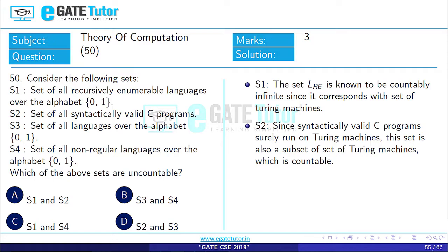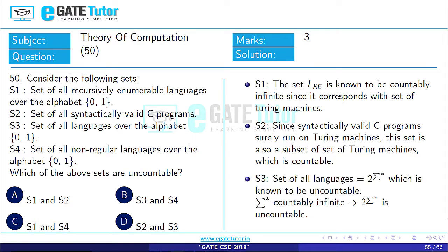Set S2, the set of all syntactically valid C programs, surely runs on Turing machines. This set is also a subset of the set of Turing machines, so it is countable.